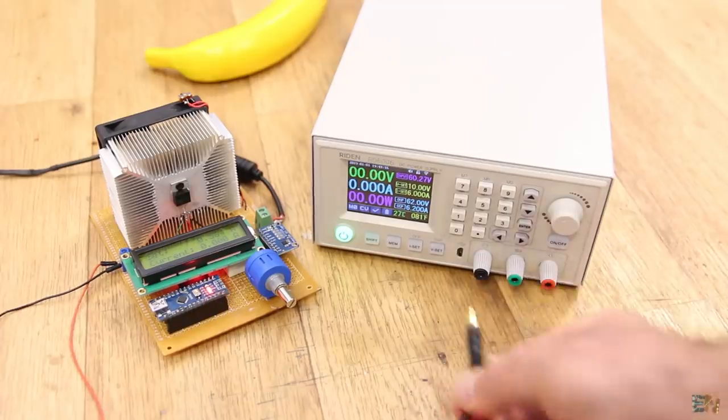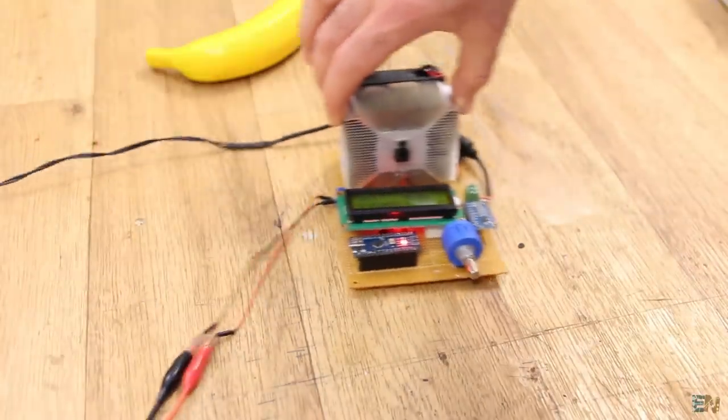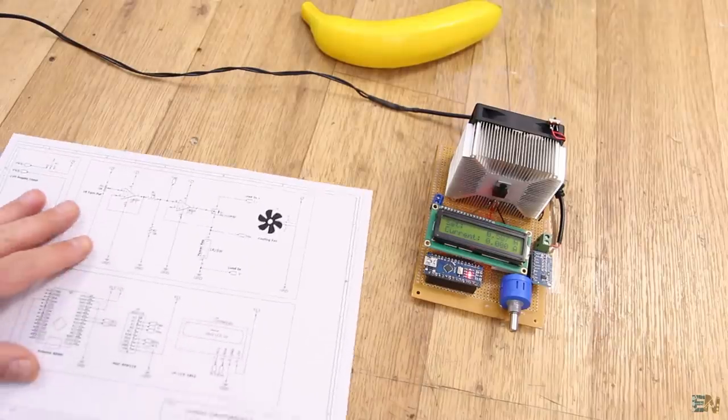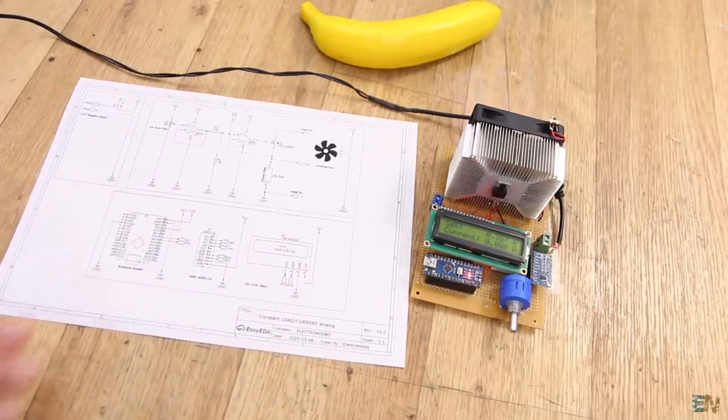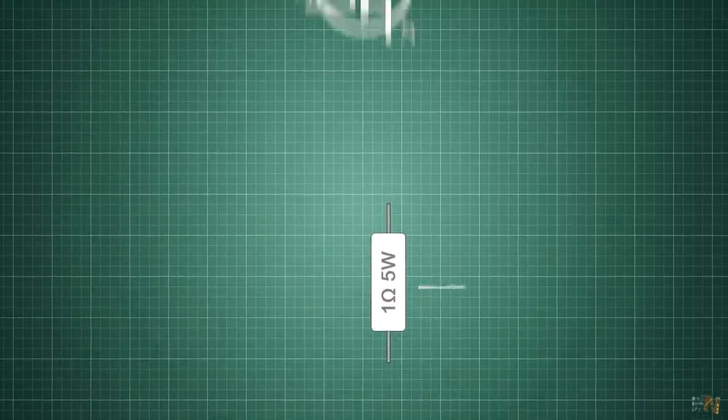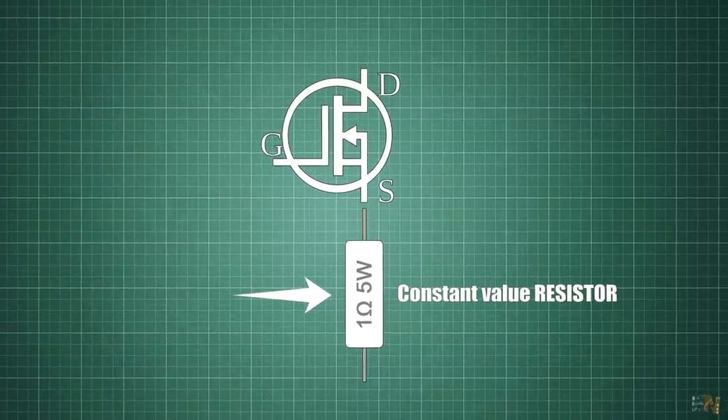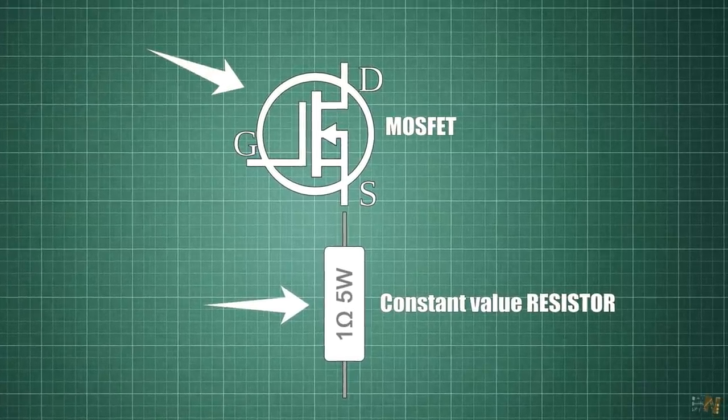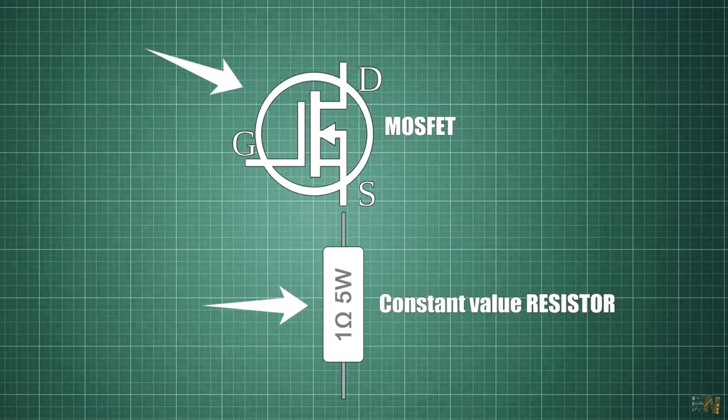Let's see the circuit, how it works and how to mount it. This here is the circuit I will use for this project. Let's start with the basics in order to understand better. For that I have some animations. We know that our load will be represented by a constant value power resistor and the MOSFET transistor in series with that. In my case, the resistor is of 1 ohm.